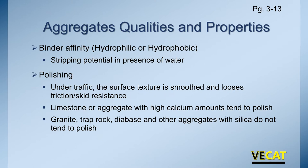We also look at binder affinity — does that rock like water or hate water? Is it hydrophilic or hydrophobic? We need to know that because when it's coated with asphalt, what happens in the presence of water? Does it strip? Does that bond break down between the aggregate and the binder? We lose stability, the material comes apart, and we lose the pavement structure. By VDOT specs, we require anti-strip in all of our asphalt mixes — it's basically an insurance policy. Not all of our aggregate strips, but by putting it in there it's much cheaper than dealing with aggregate that does strip in the presence of water.